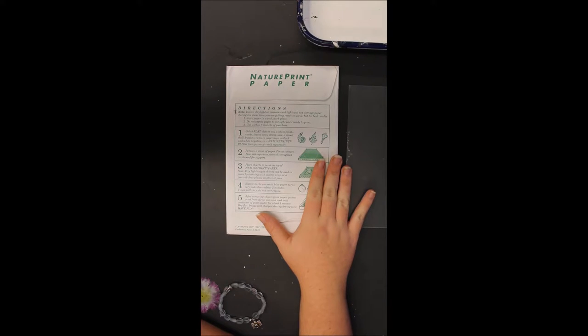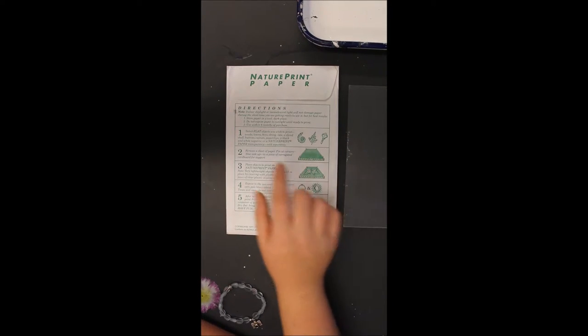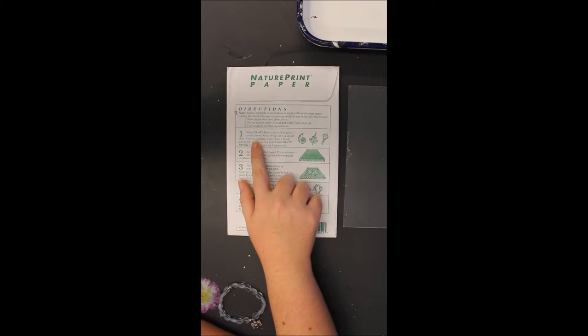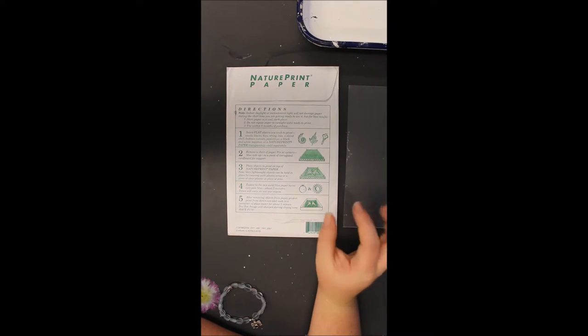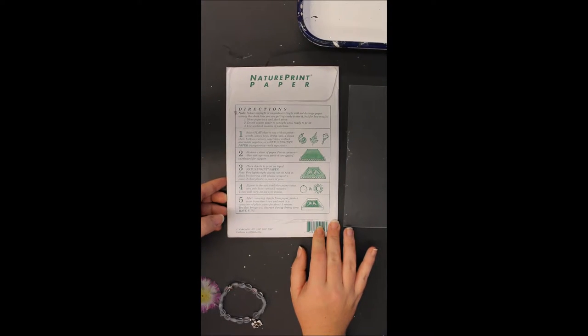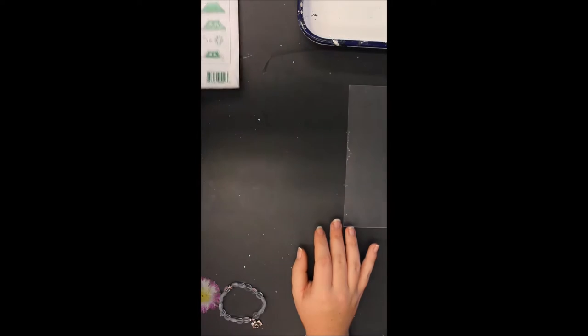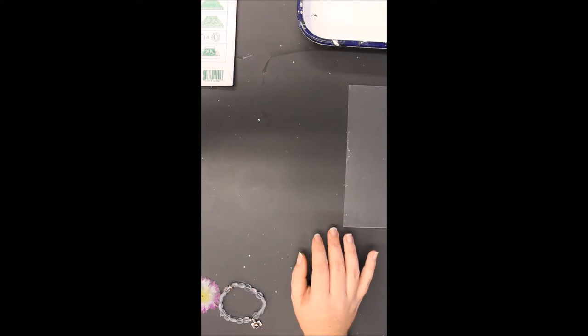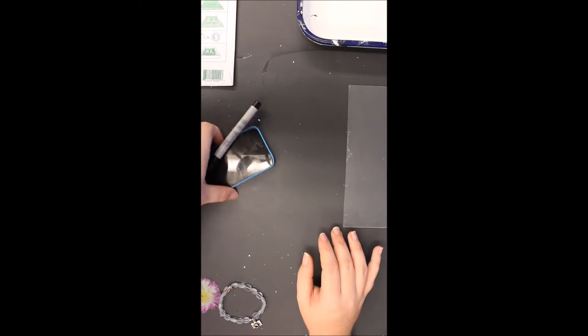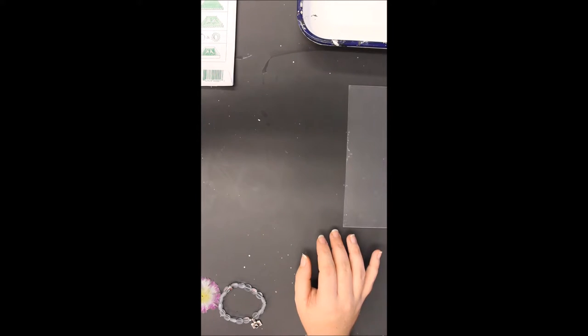Step one: select flat objects you wish to print. It suggests weeds, leaves, keys, string, lace, shell, etc. Sometimes slightly transparent objects work well too. For your homework, you need to select five objects that are unique to you. This doesn't mean I'm going to do my cell phone and the sharpie I found in my backpack. That's not going to count. What you need to do is really think about something that talks about you, who you are as a person.